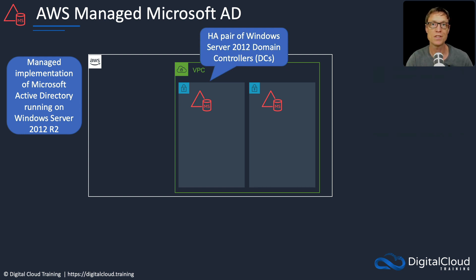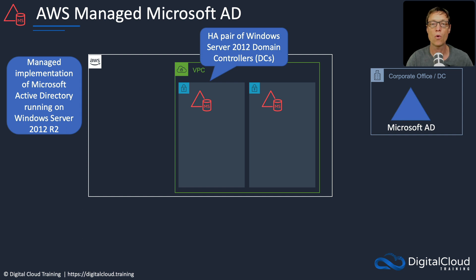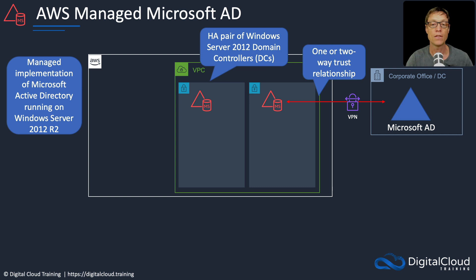You can use these Active Directory domain controllers for adding users and computers and for authorization. Another thing you can do is if you already have a Microsoft Active Directory running in your own company on premises or somewhere else, you can connect that over a VPN and create a trust relationship between the managed Microsoft AD and your own corporate self-managed Active Directory. That can be a one-way or two-way trust relationship.